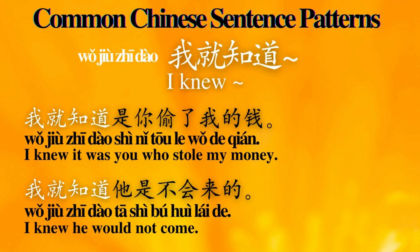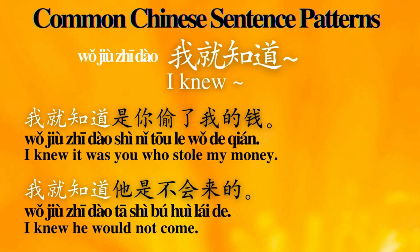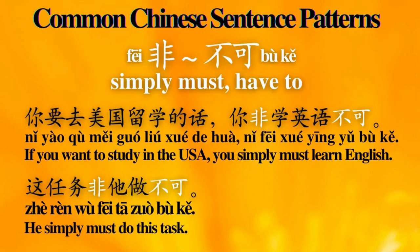Number 9: 我就知道 — 'I knew.' Sentence examples: 我就知道是你偷了我的钱。 I knew it was you who stole my money. 我就知道她是不会来的。 I knew she wouldn't come.